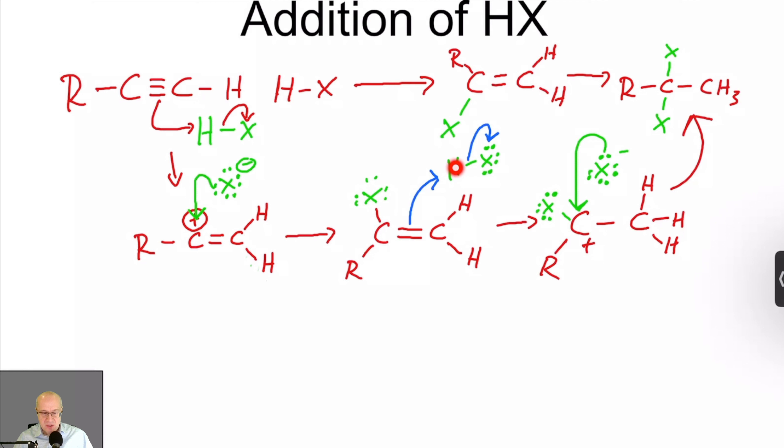Pi bond here attacks the hydrogen of HX. Lone pairs go to the X, forming X minus. The Markovnikov cation forms. Then the X minus attacks the carbocation to give you what's known as the geminal dihalide. That's how this mechanism works.